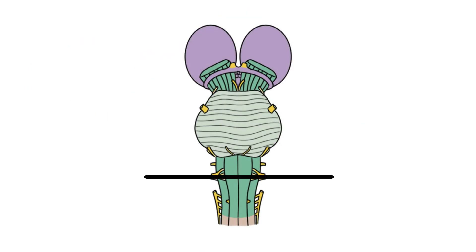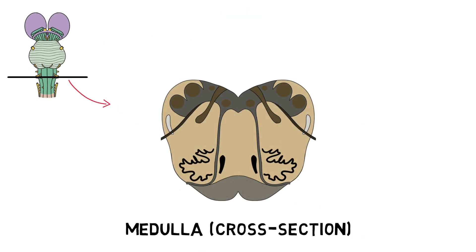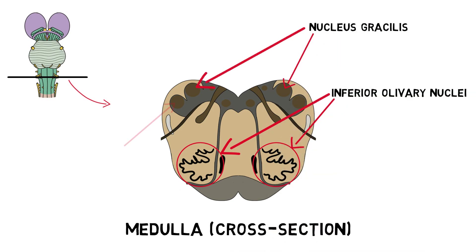The medulla also controls a number of other reflexive actions like swallowing, coughing, sneezing, and vomiting. It is home to the inferior olivary nuclei, which are connected to the cerebellum and involved in movement. It also contains the nucleus gracilis and nucleus cuneatus, which are important nuclei of the dorsal column's medial lemniscus sensory pathway.